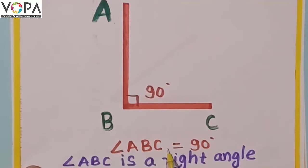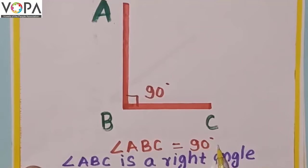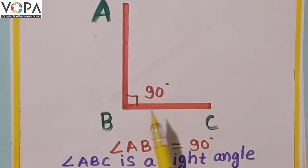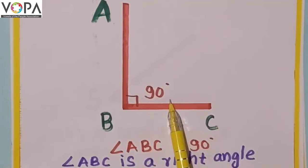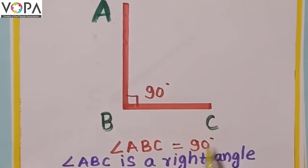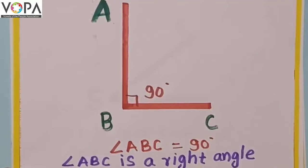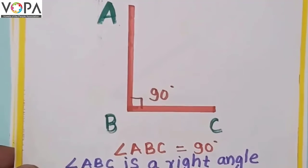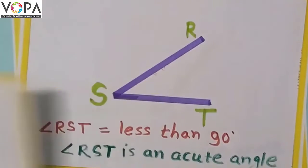Angle ABC is 90 degrees, so angle ABC is a right angle. Angles measuring 90 degrees are called right angles. Okay, now let's see another one.